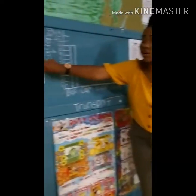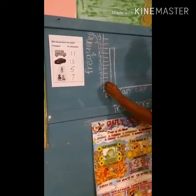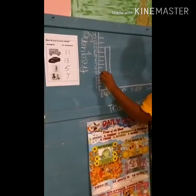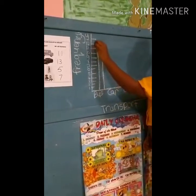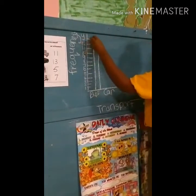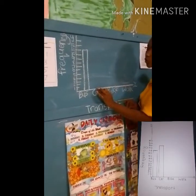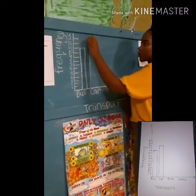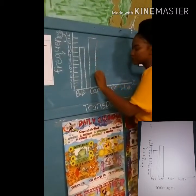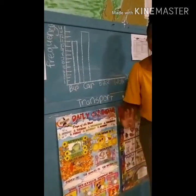Exactly the same with the car. Because 13 learners take the car, we're going to count: 1, 2, 3, 4, 5, 6, 7, 8, 9, 10, 11, 13. So we're plotting at 13, and it must be in line with the car column, and then we draw our bar that represents the amount of learners who go to school by car daily.